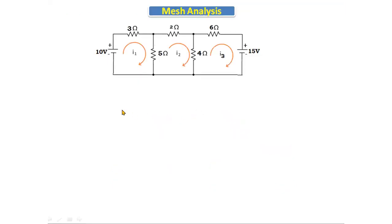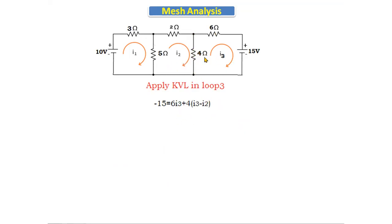Applying KVL in loop three: the current enters from the positive terminal, so we write −15 volts. The 6Ω resistor carries only I3, giving 6·I3, and the 4Ω resistor is common to loops three and two, giving 4·(I3 − I2), since both currents flow in opposite directions. Simplifying: −4·I2 + 10·I3 = −15. This is equation number three.